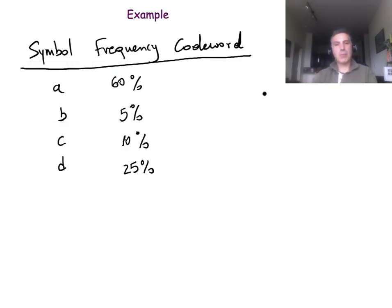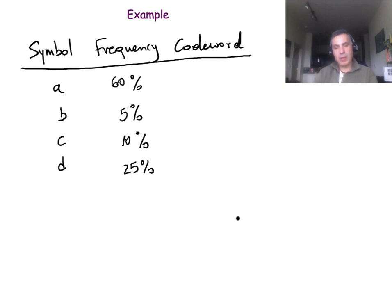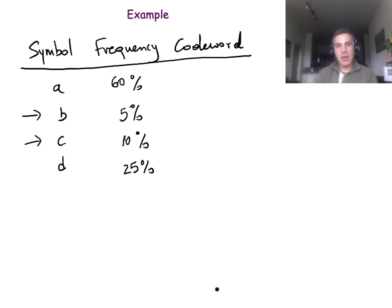Let's look at an example and create the algorithm ourselves based on what we know so far. These are four symbols and the corresponding frequencies. What is the code word set that will actually give us the minimum average bit length? We know that the two symbols with the lowest frequency, in this case B and C, will appear at the maximum depth at the bottom of the corresponding tree. So we can start in a bottom-up manner by placing those two symbols at the bottom.